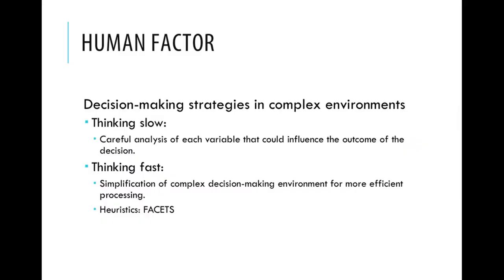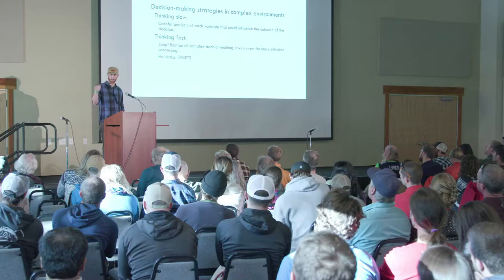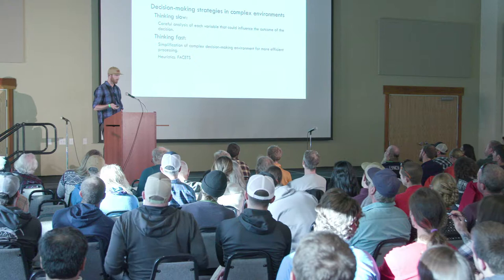Some of the human factors we're looking at through surveys are whether people are making slow, calculated decisions using things like the avalanche forecast level, their own field observations, and the weather forecast — or are people making quick decisions and using heuristic traps or shortcuts, not going through a step-by-step decision-making process but jumping from start to end and making a less objective decision about whether to travel.